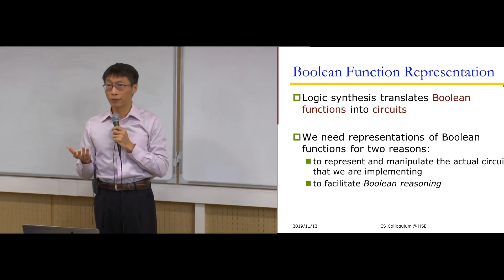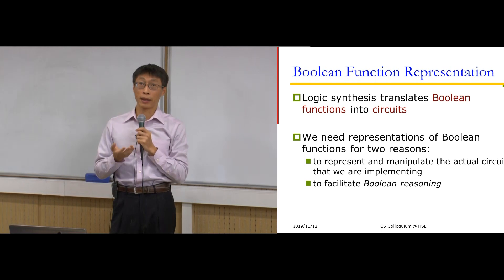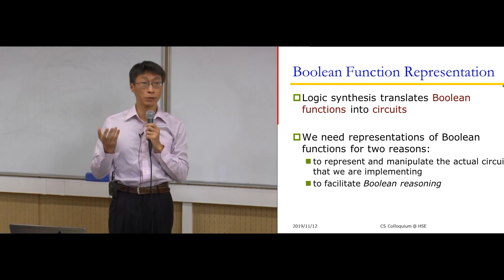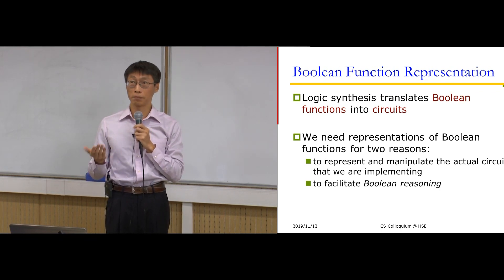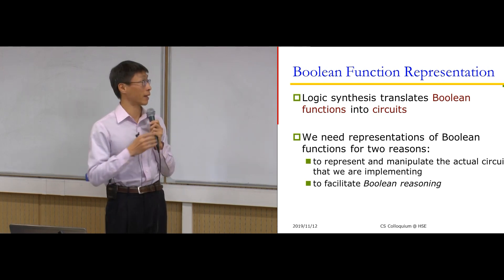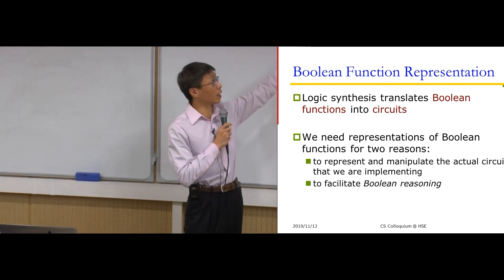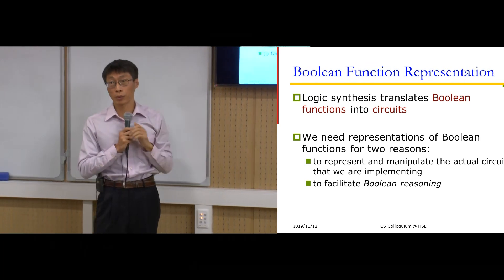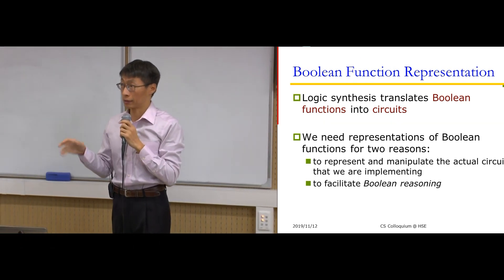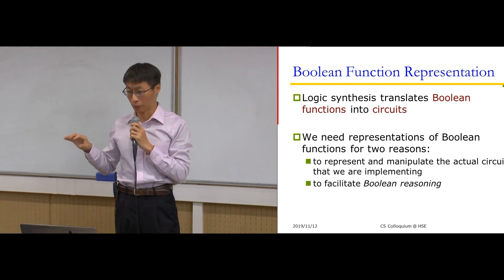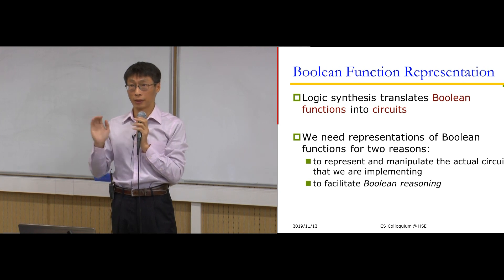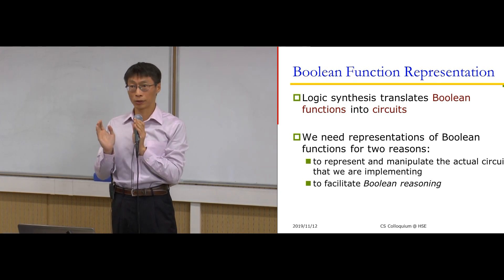The fundamental object we need to manipulate is the Boolean function. We need to efficiently represent Boolean functions so that we can carry out Boolean reasoning tasks. We need Boolean function representation for two reasons: first, what we want to implement is the final circuit representation; and second, we need an efficient data structure from a software point of view to efficiently perform Boolean reasoning or logical constraint solving.